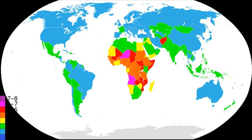The most significant population planning system in the world was China's one-child policy, in which, with various exceptions, having more than one child was discouraged. Unauthorised births were punished by fines, although there were also allegations of illegal forced abortions and forced sterilisation.